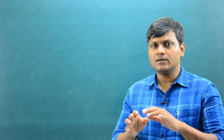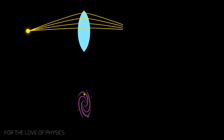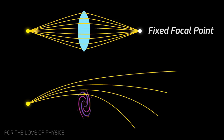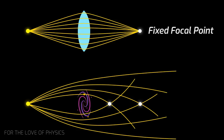Gravitational lenses are a little different from optical lenses. With optical lenses, light bends more and more as you move farther from the center, creating a fixed focal length. But with galactic clusters, as you move away from the center of mass, the amount of bending decreases. Because of this, light from a far away object behind a galactic cluster does not fall onto one focal point — gravitational lenses do not have one fixed focal point.